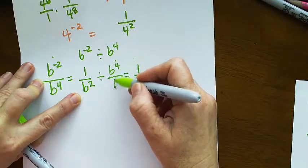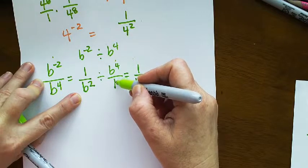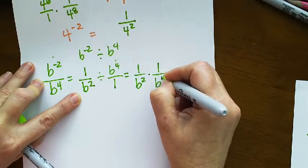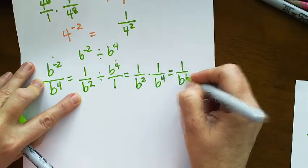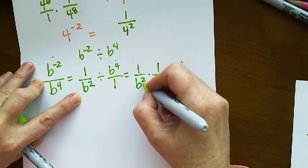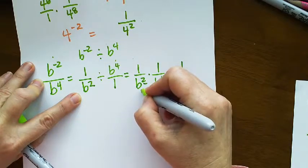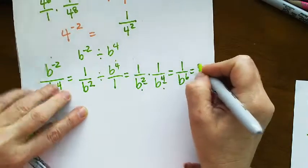So it's 1 over B squared, then you multiply by the reciprocal so you multiply by 1 over B to the 4th which would be 1 over B to the 6th because I'm going to add these together. I'm multiplying B squared times B to the 4th, that would give me B to the negative 6.